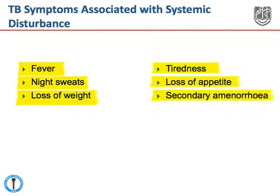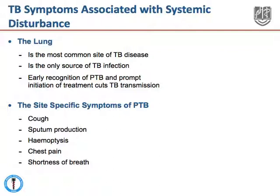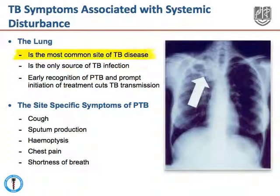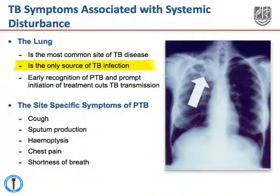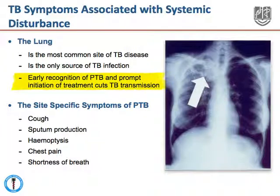It's very rare that patients will have TB without one or more of these symptoms. Organ-specific tuberculosis is very important and all healthcare workers must be able to recognize the common symptoms. The lung is the most common site of TB disease and it is the only site where TB can be transmitted from one individual to another. It is therefore important that tuberculosis of the lung is rapidly recognized and promptly treated, because this cuts transmission of TB.